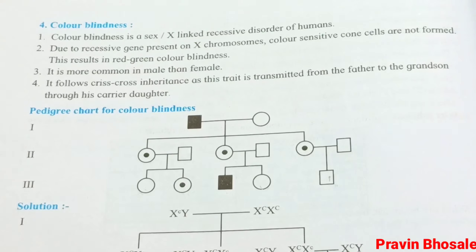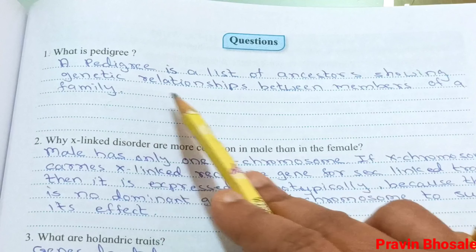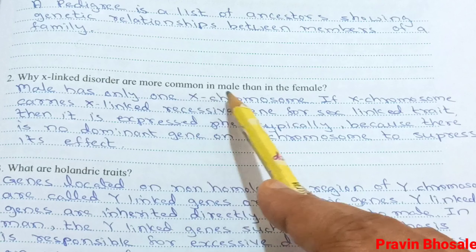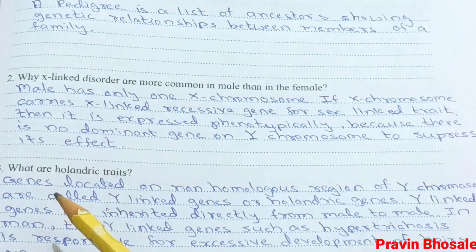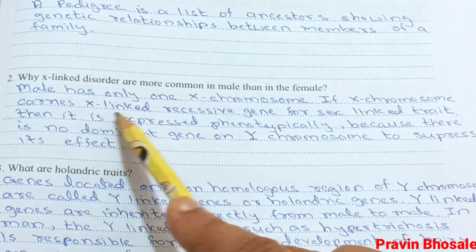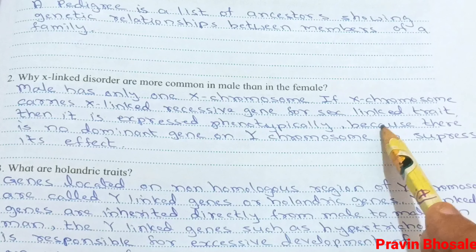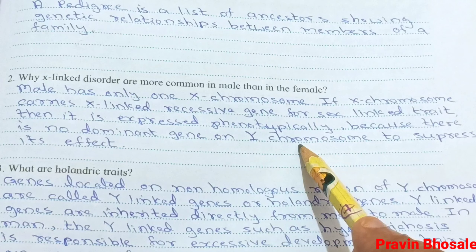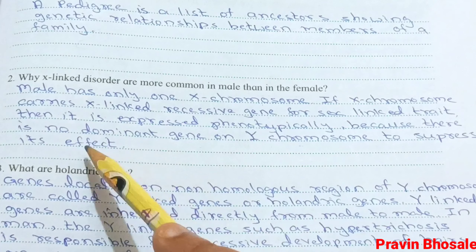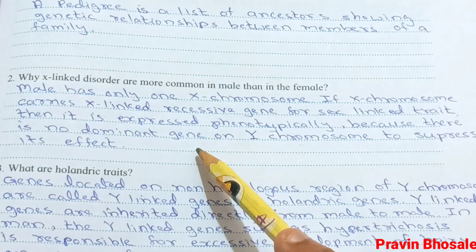Questions: What is pedigree? A list of ancestors showing genetic relationship between members of a family. Why are X-linked disorders more common in males than females? Males have only one X chromosome. If the X chromosome carries an X-linked recessive gene for a sex-linked trait, it is expressed phenotypically because there is no dominant gene on the Y chromosome to suppress its effect. That is why X-linked disorders are more common in males.